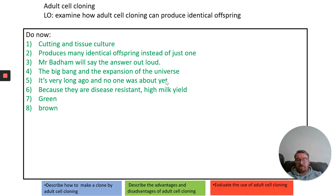We're interested in cloning for farmers in particular because they can make organisms that are disease resistant, have a high milk yield, large muscle capacity — whatever characteristic it is that they need.